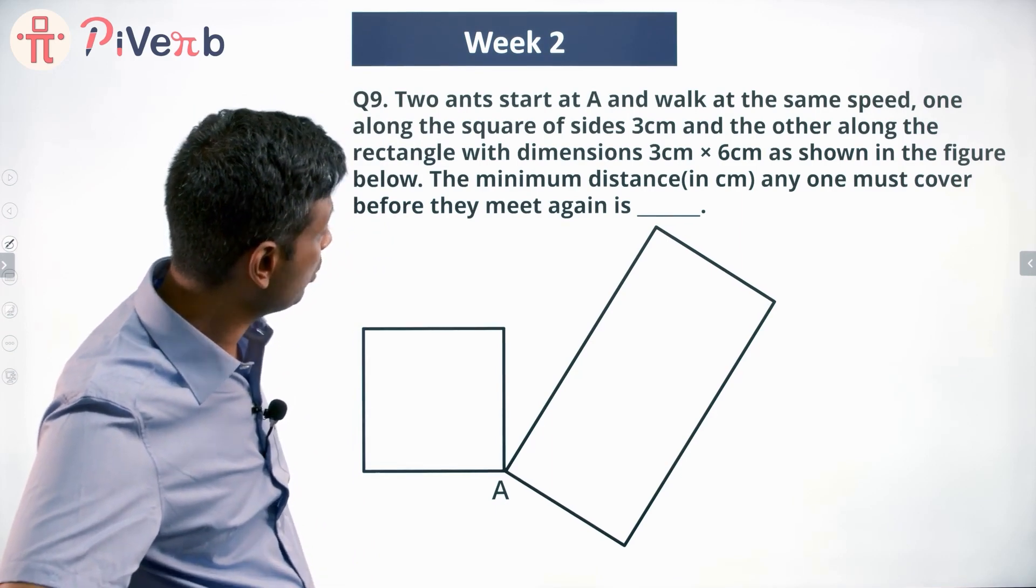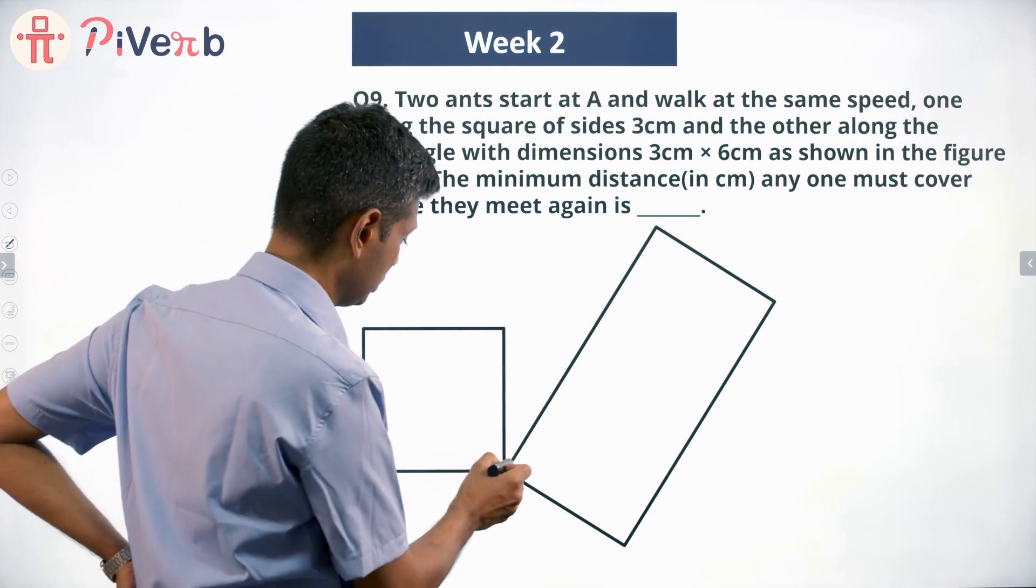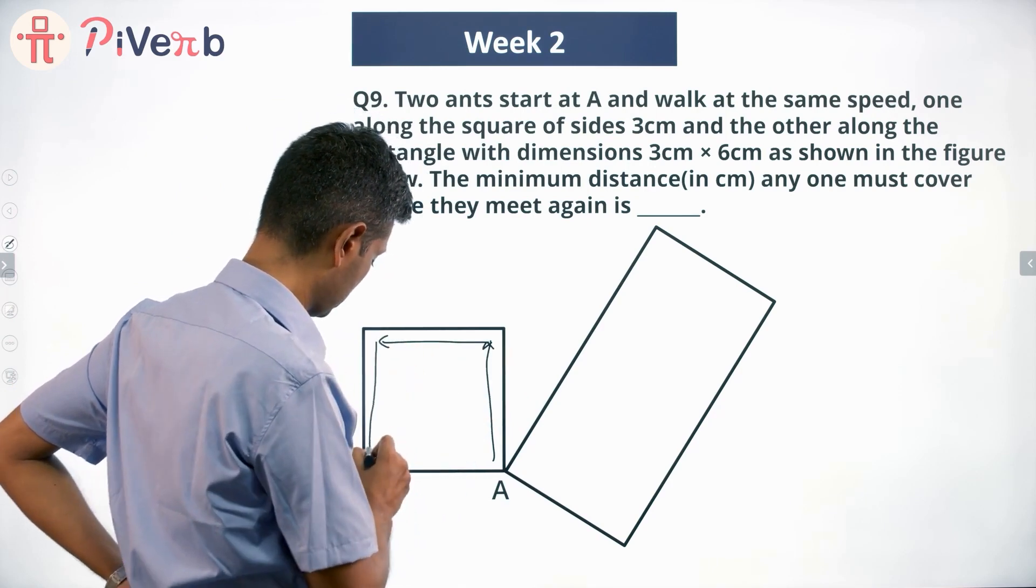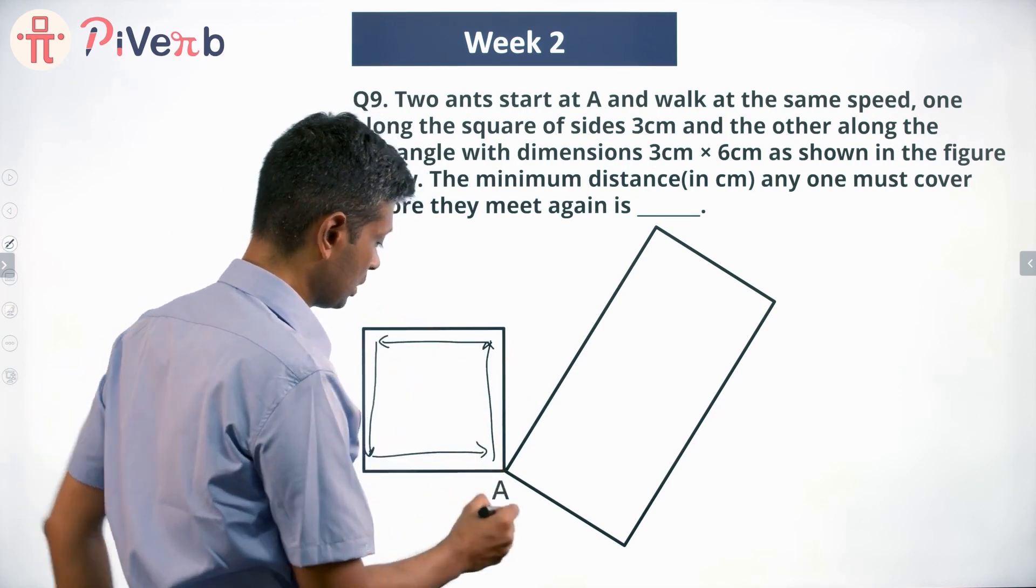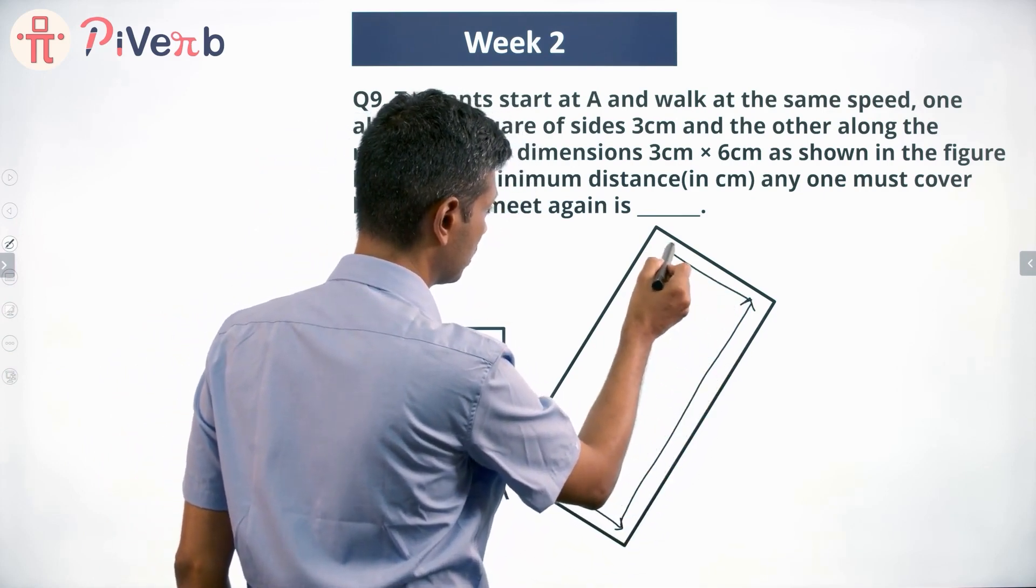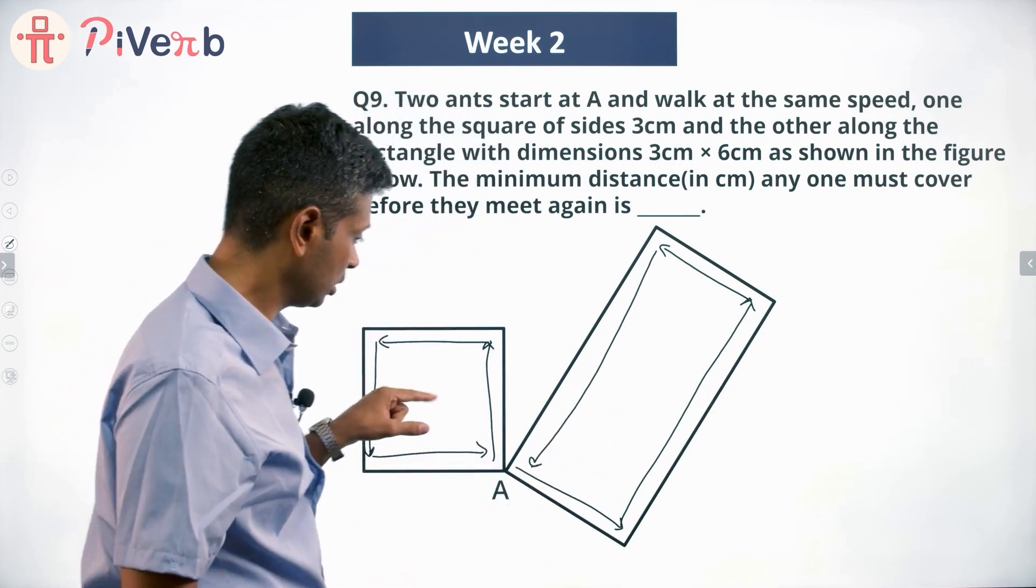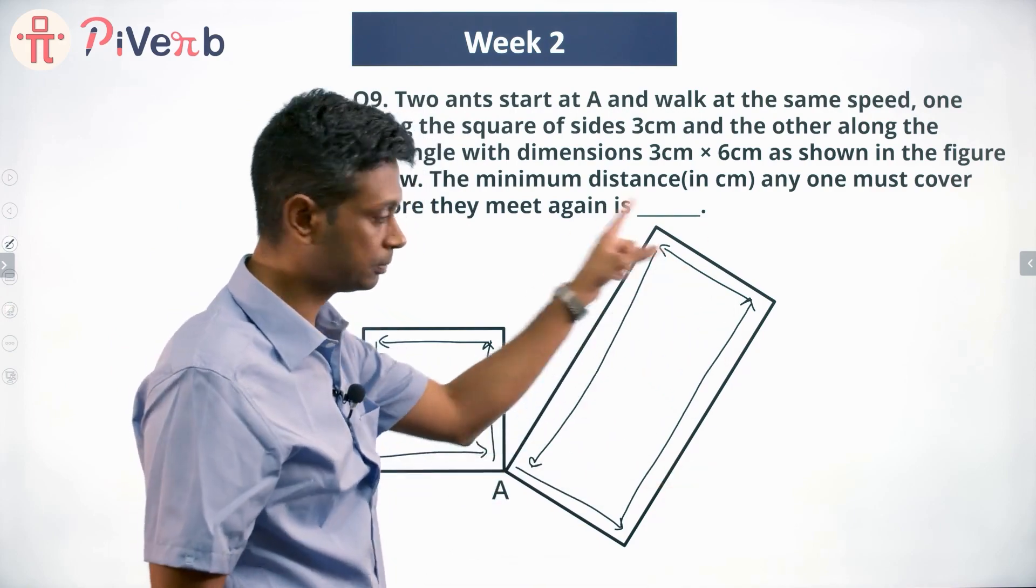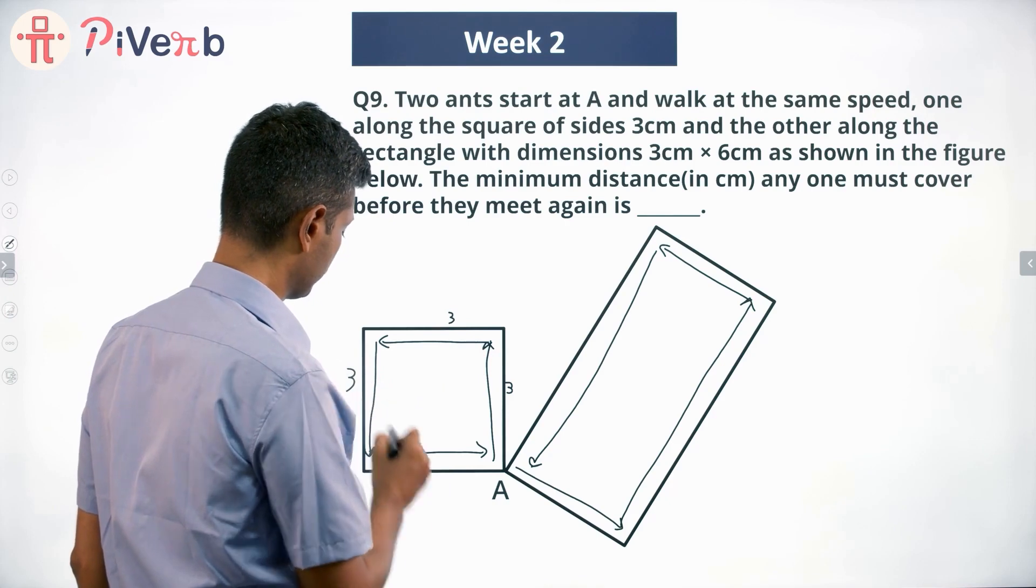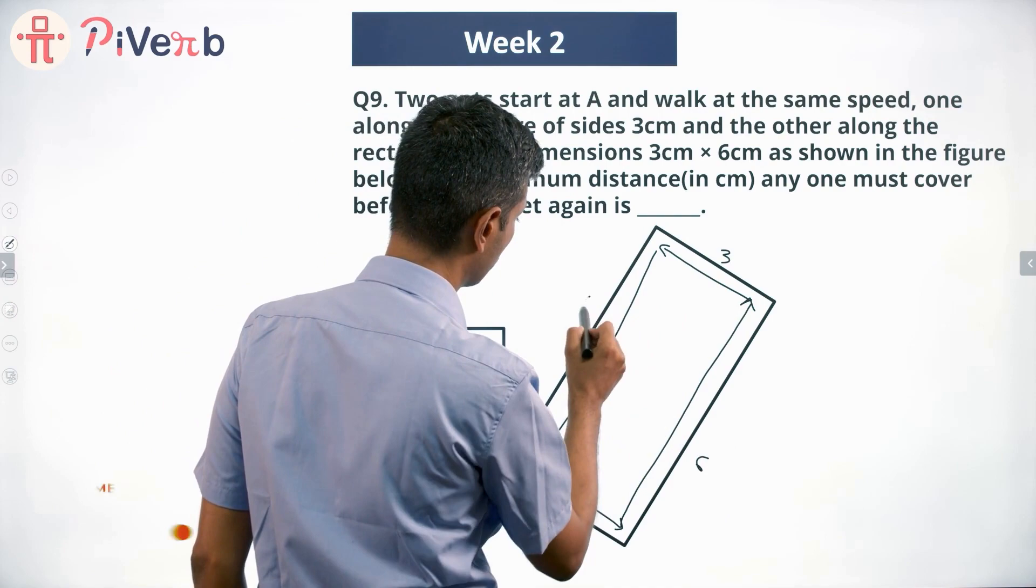The minimum distance anyone must cover before they meet again. They start at A, one ant goes like this perhaps, another ant goes like this. This keeps going around in this square, this keeps going around in this rectangle. This measures 3, 3, 3, 3. This measures 3, 6, 3, 6.